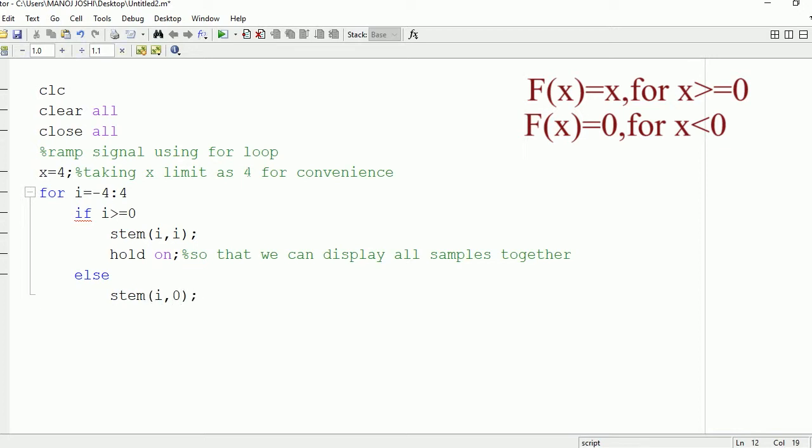In any other condition, when the value of i is less than 0, in that condition 0 will be plotted. So stem(i, 0), where i is the x value and 0 is the amplitude. Now we're gonna end this if, and also we are gonna end this for.